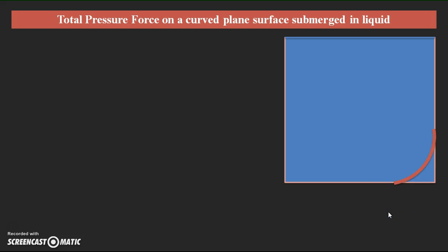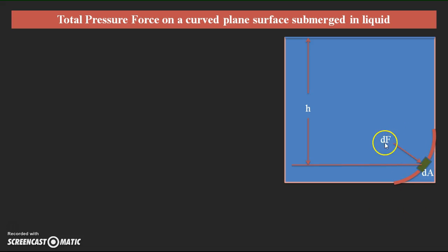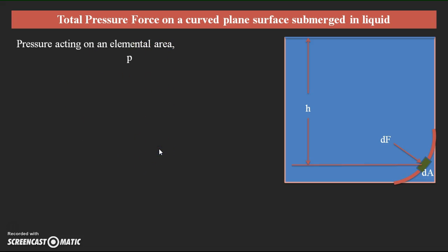Assume a container in which one curved plate is submerged at a particular height h. For finding the total pressure force on this curved plate submerged in the liquid at height h, we initially assume a small elemental area dA. Perpendicular to this elemental area, a force due to pressure will be acting — assume this pressure force as df. The pressure acting on this elemental area with respect to height acts in the form of ρgh.